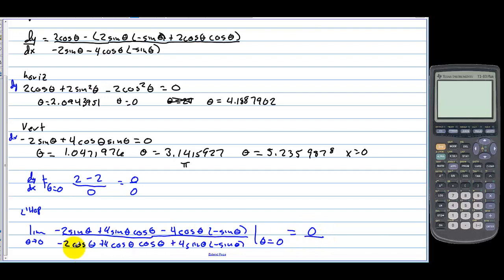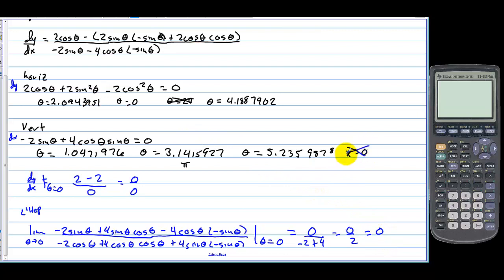In the denominator we get negative 2 plus 4 plus 0, giving 2. So the limit is 0 over 2, which equals 0. The slope is not vertical at theta equals 0 — it is actually horizontal. So theta equals 0 belongs to the horizontal tangent group.